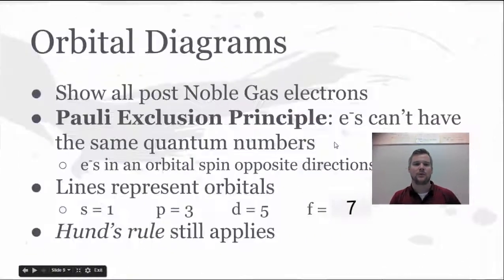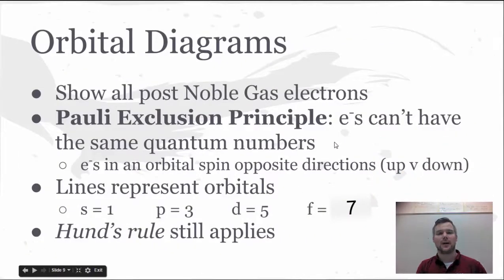The last step is to draw an orbital diagram. Orbital diagrams for our class are only going to show post-noble gas electrons. You could do a full-blown orbital diagram for all the electrons, but that's just a lot of really kind of pointless work. When we draw an orbital diagram, we need to worry about Pauli's exclusion principle. Now, the technical definition says electrons can't have the same quantum numbers, which means basically that each electron is unique. And because of that, the electrons in an orbital spin in the opposite direction.